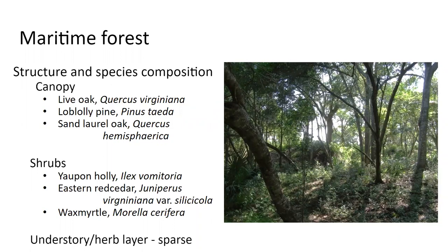Looking at the canopy of these forests — this photo is taken inside a maritime forest and it's quite dark. The canopy is live oak, Quercus virginiana, with significant components of loblolly pine and sand laurel oak, Quercus hemispherica, which can tolerate sandy soils. There's a well-developed shrub layer consisting of yaupon holly (Ilex vomitoria), eastern red cedar (Juniperus virginiana var. silicicola — silicicola referring to sand), and wax myrtle (Morella cerifera). If you think about it, all of these are evergreen species with a waxy coating that protects them from salt spray.